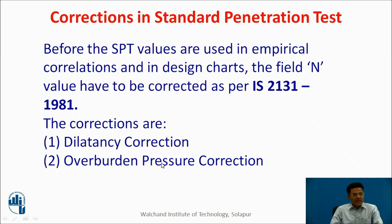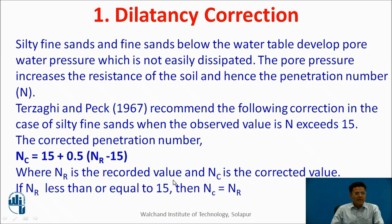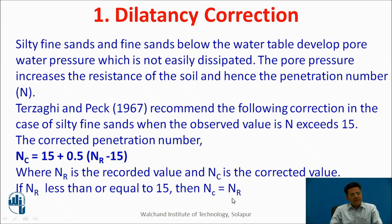Silty fine sands and fine sands below the water table develop pore water pressure which is not easily dissipated. This pore pressure increases the resistance of the soil and hence the penetration number N. Terzaghi and Peck (1967) recommended the following correction for silty fine sands when the observed value Nr exceeds 15: the corrected penetration number Nc = 15 + 0.5 × (Nr − 15), where Nr is the number of recorded blows and Nc is the corrected value. If Nr is less than or equal to 15, then the corrected value of N equals the recorded value.